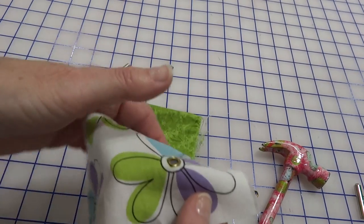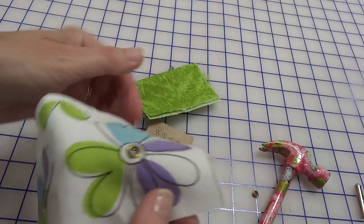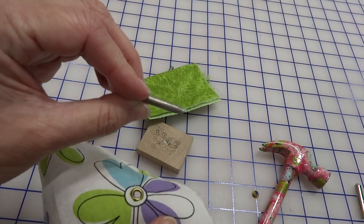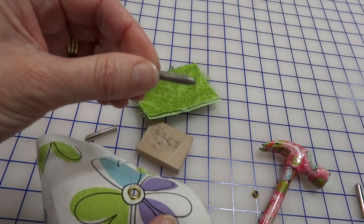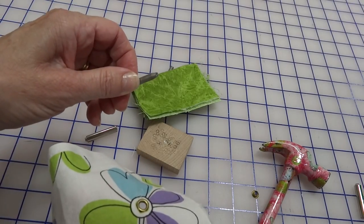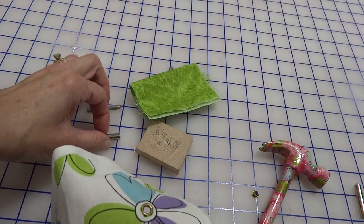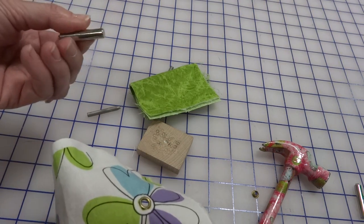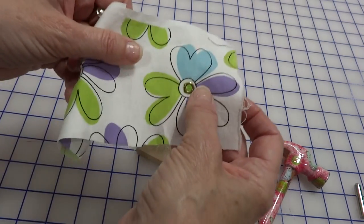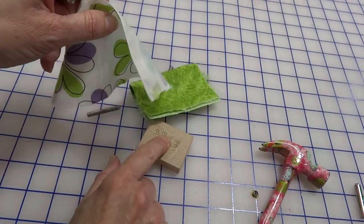First you make the hole with this little tool that makes the eyelet, and be sure that's not bigger than your eyelet or you're going to have a problem and your eyelet won't go around the fabric.